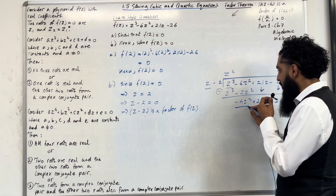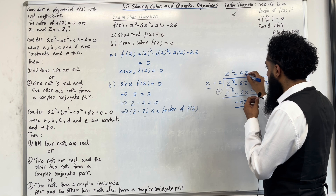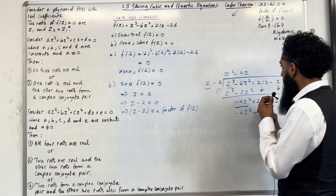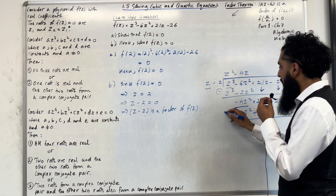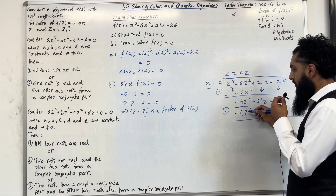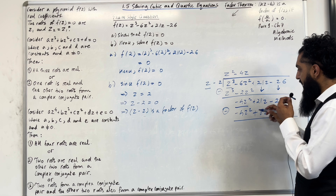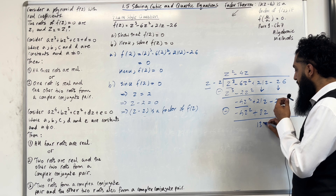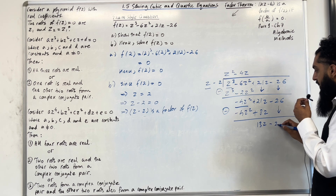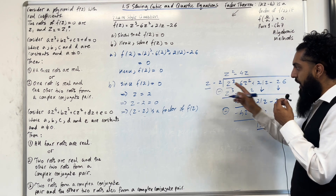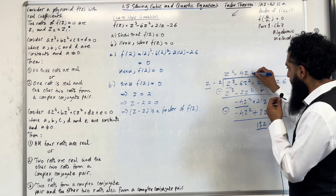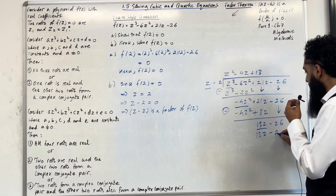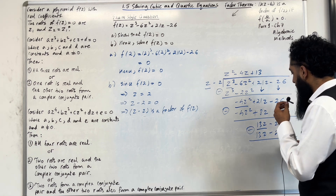Taking −4z² ÷ z = −4z. Expanding −4z × (z − 2) gives −4z² + 8z. Subtracting: 21z − 8z = 13z. Bringing down −26. Then 13z ÷ z = +13. Expanding 13 × (z − 2) gives 13z − 26. Subtracting gives 0.